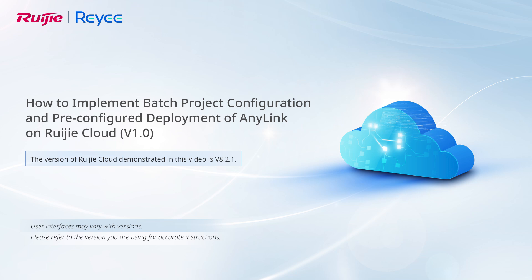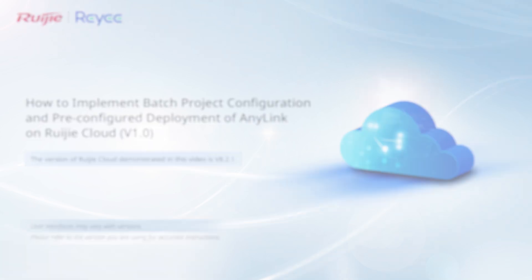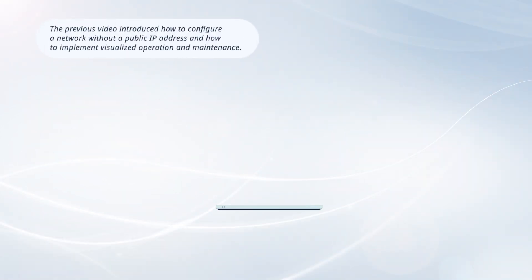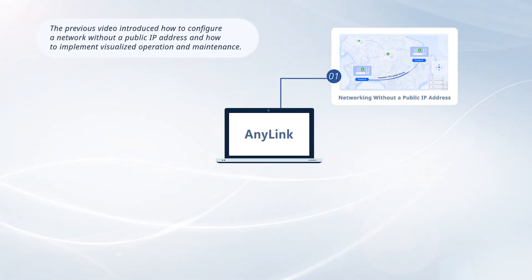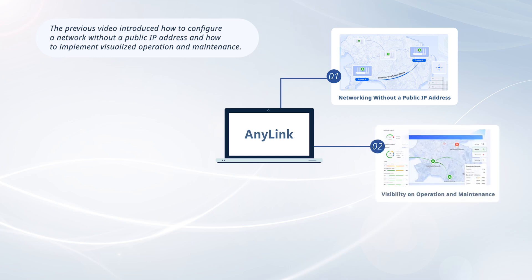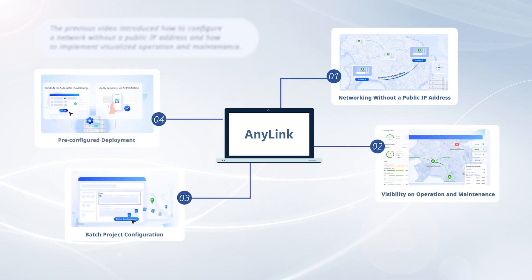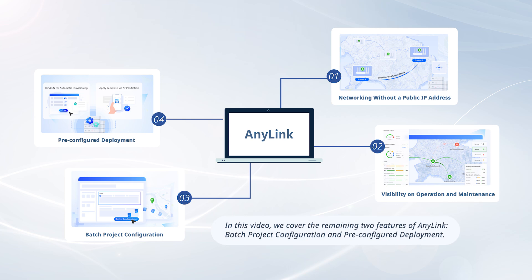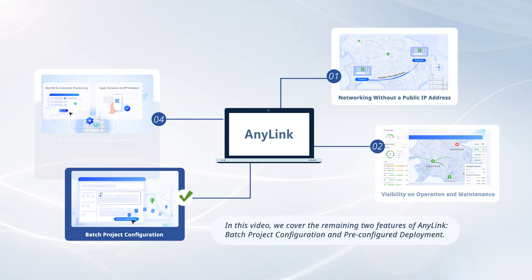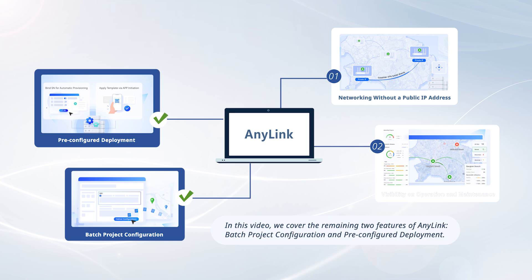This video demonstrates how to implement batch project configuration and pre-configured deployment of Anylink on Weijia Cloud. The previous video introduced how to configure a network without a public IP address and how to implement visualized operation and maintenance. In this video, we cover the remaining two features of Anylink: batch project configuration and pre-configured deployment.